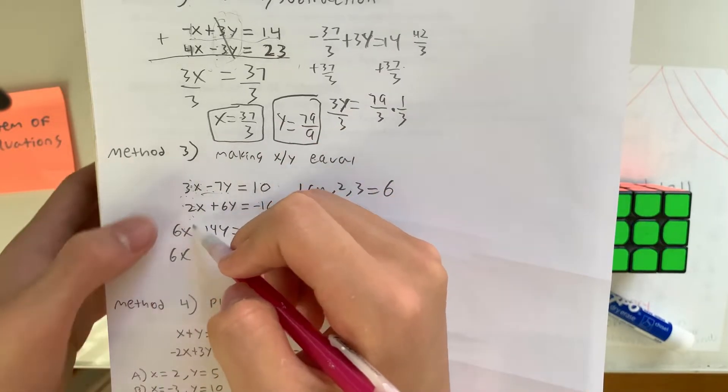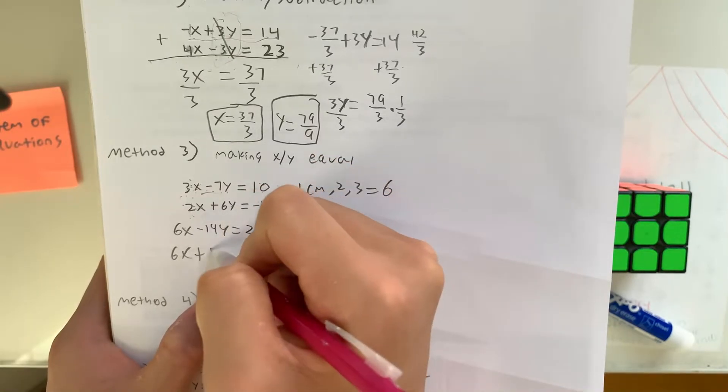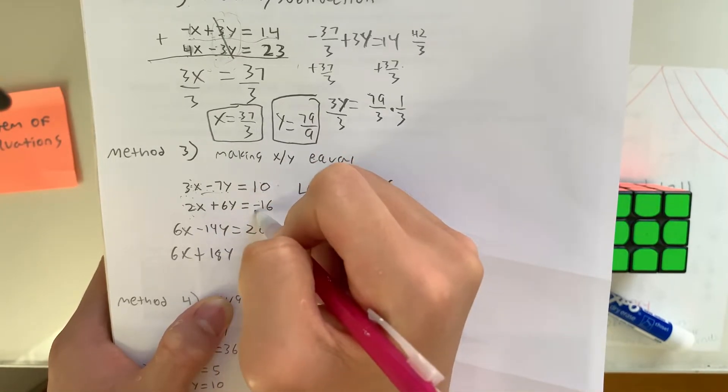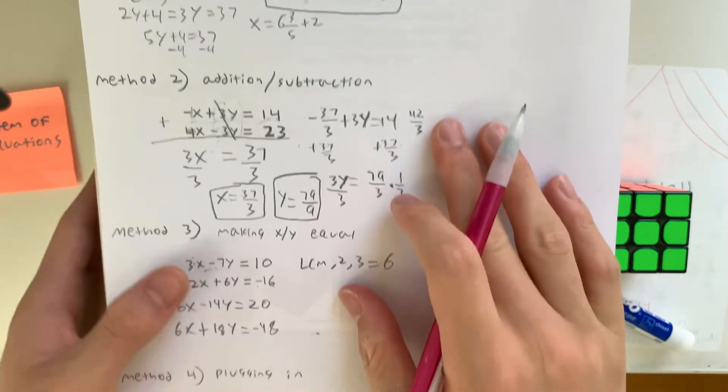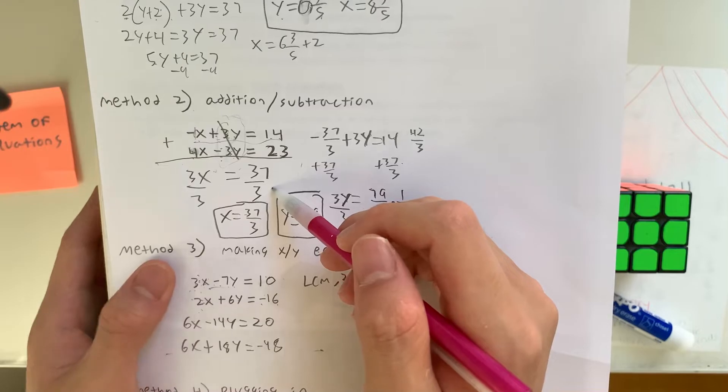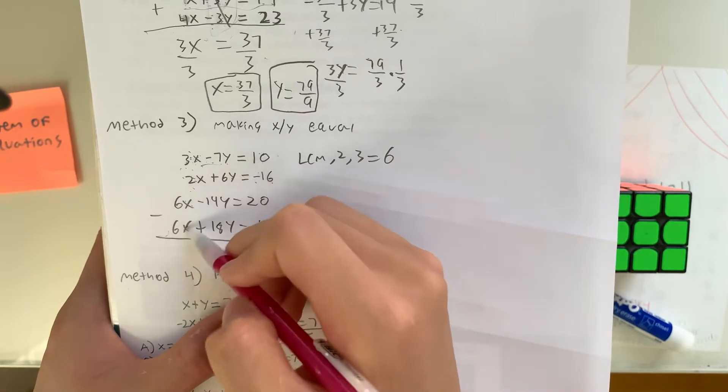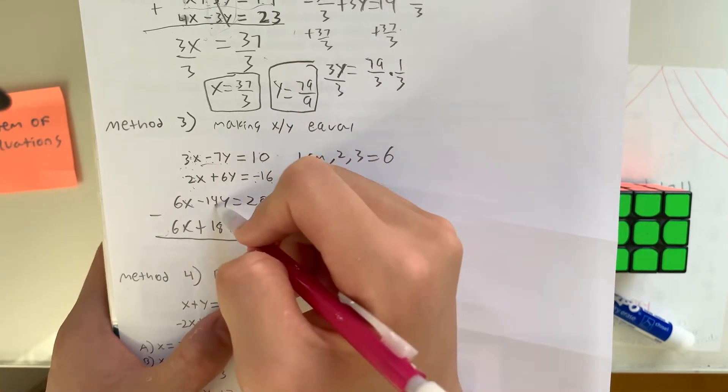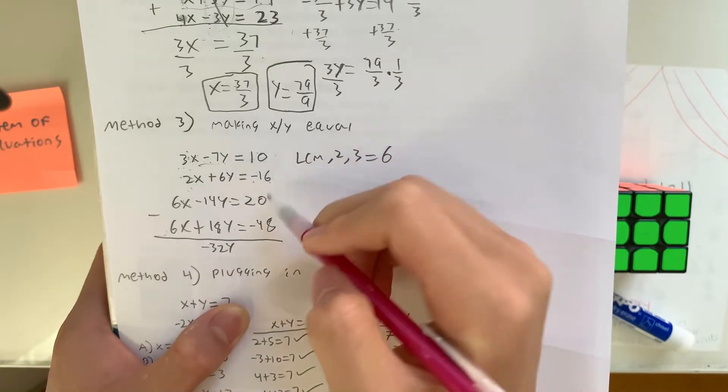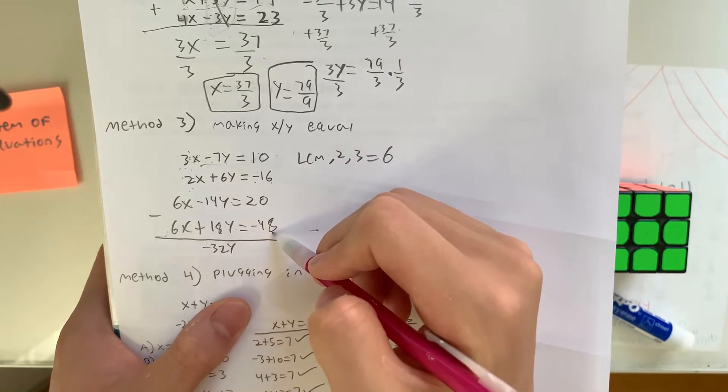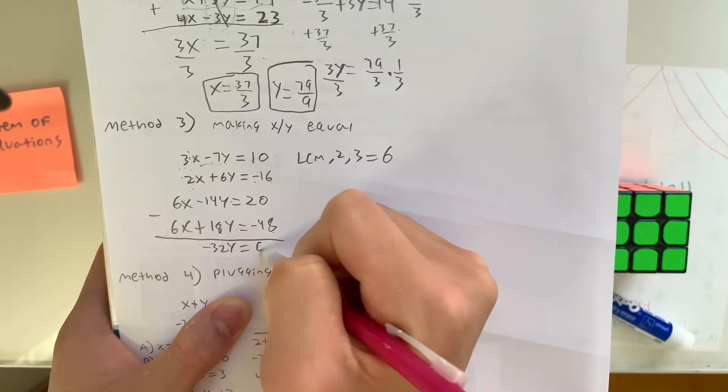So now how did you get 6x from 2x? You multiplied by 3. So that's plus 6 times 3, 18y. Negative 16 times 3? That's negative 48. And now look, you have equal. As we just learned from the addition and subtraction method, you can now subtract. 6x minus 6x is 0. Negative 14y minus 18y is negative 32y. And 20 minus negative 48 is equal to 68.